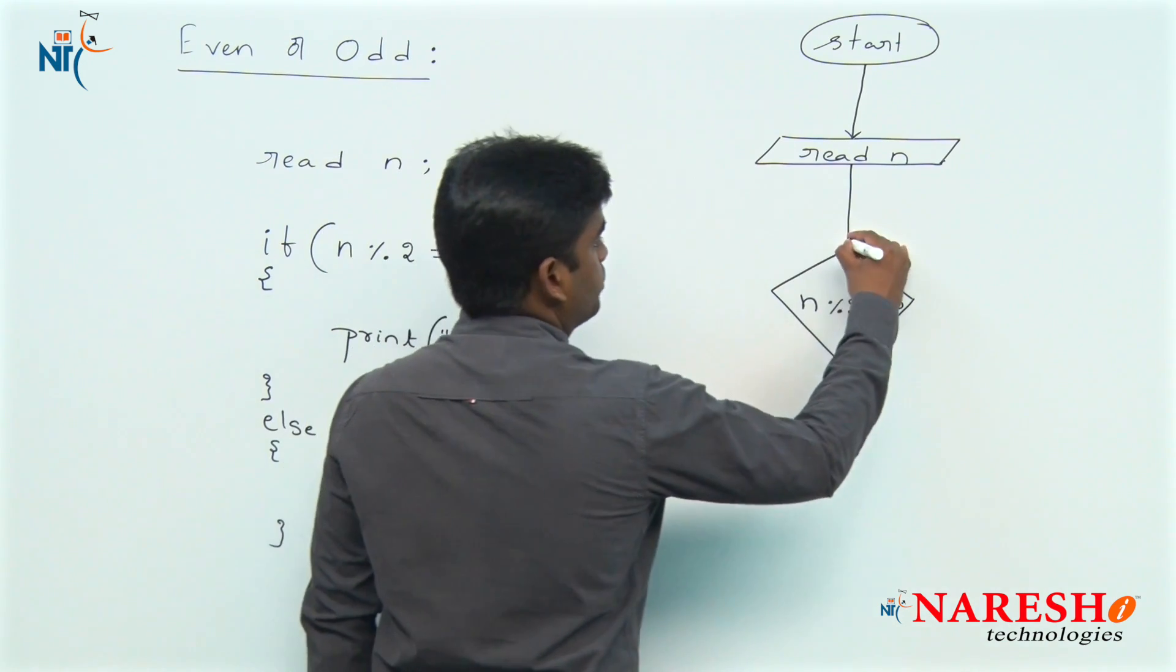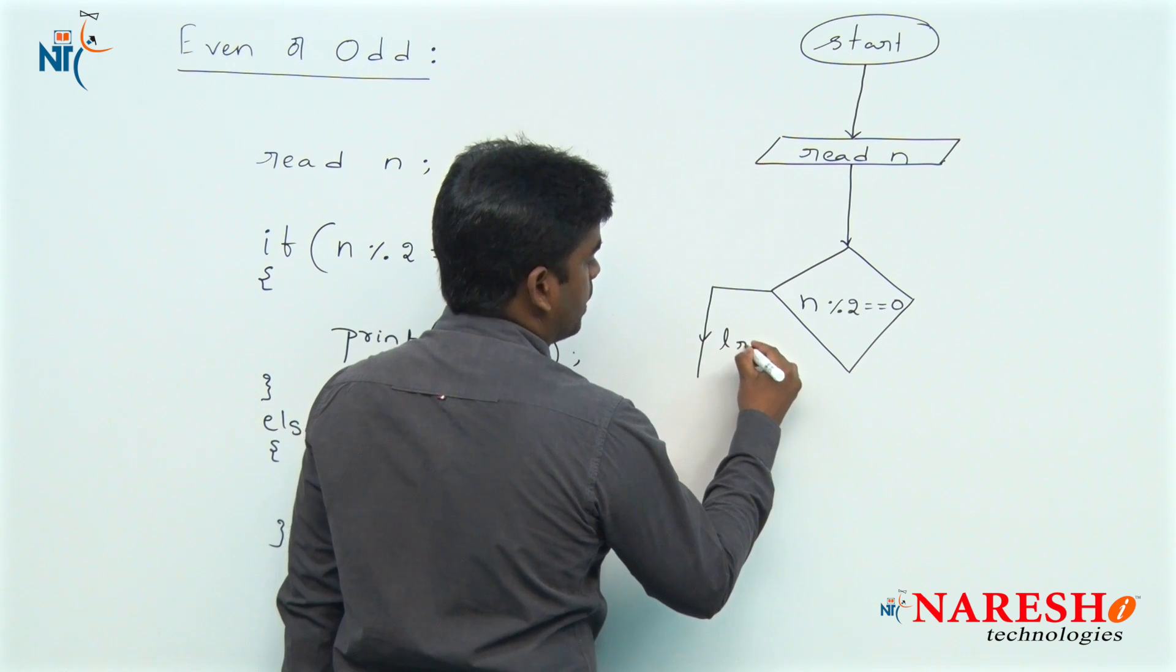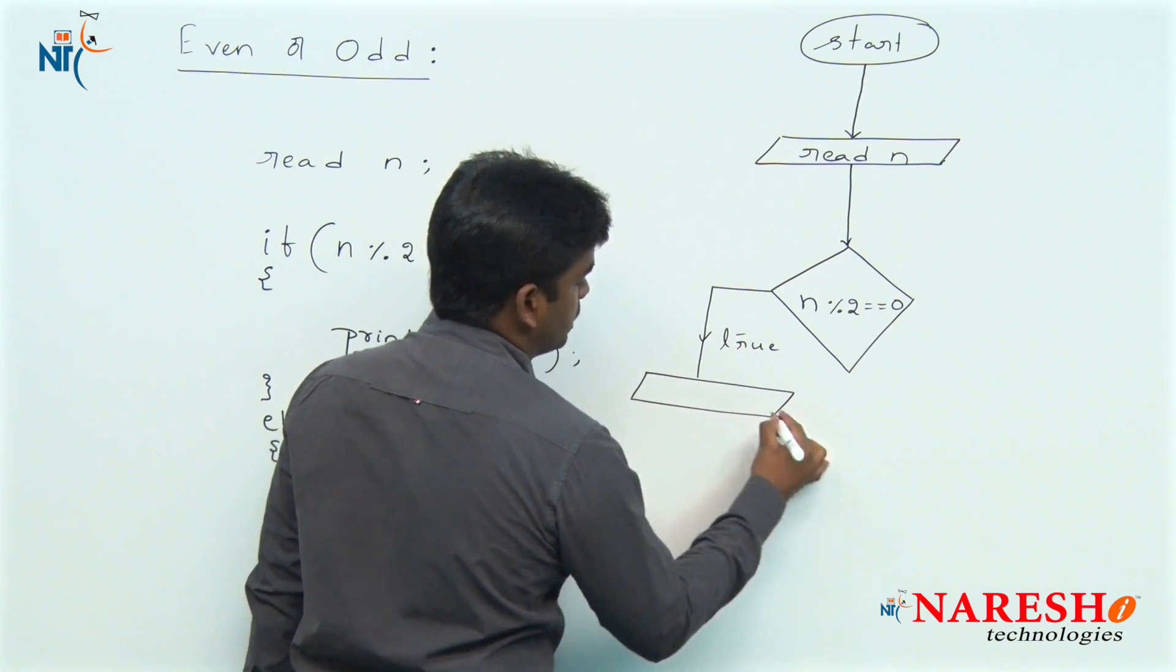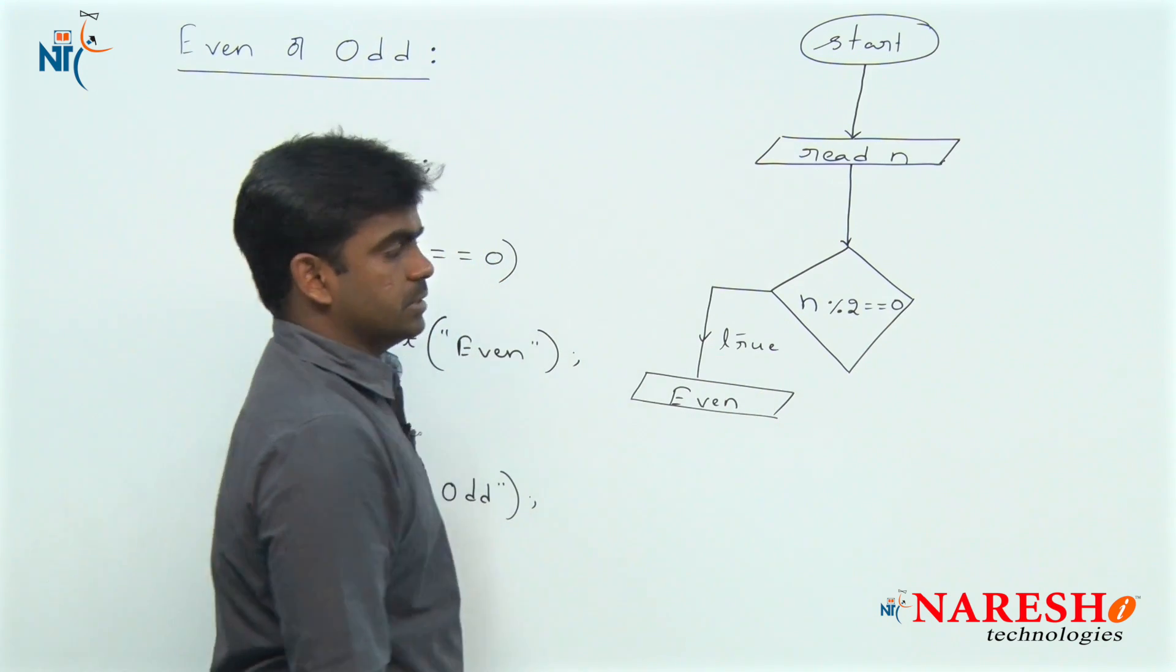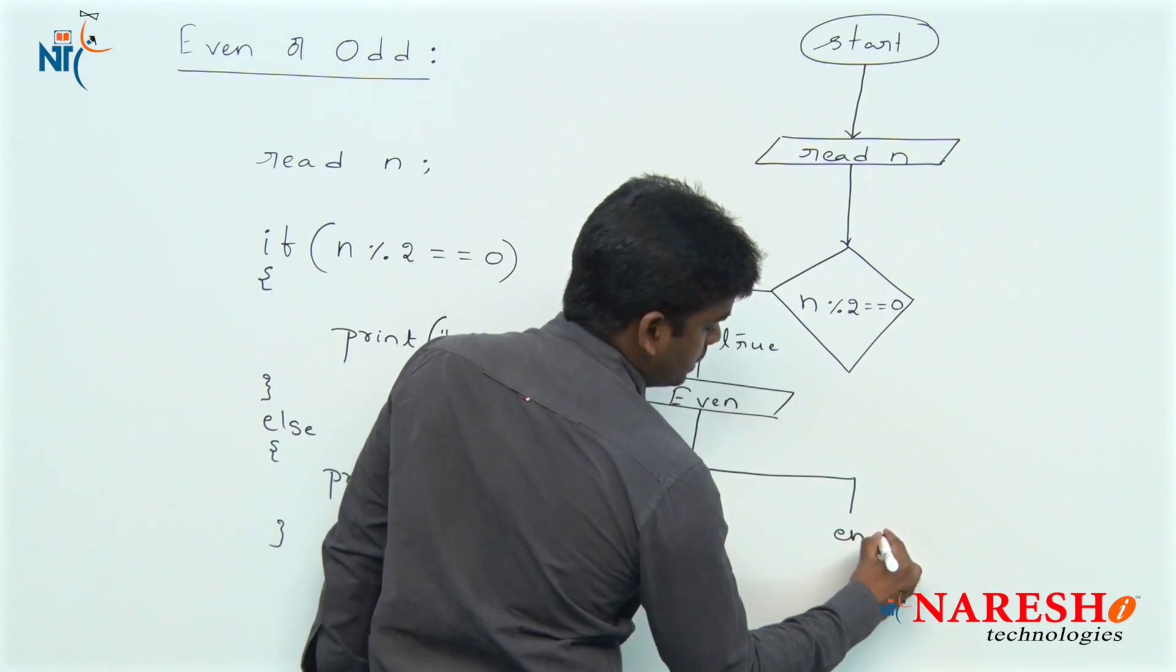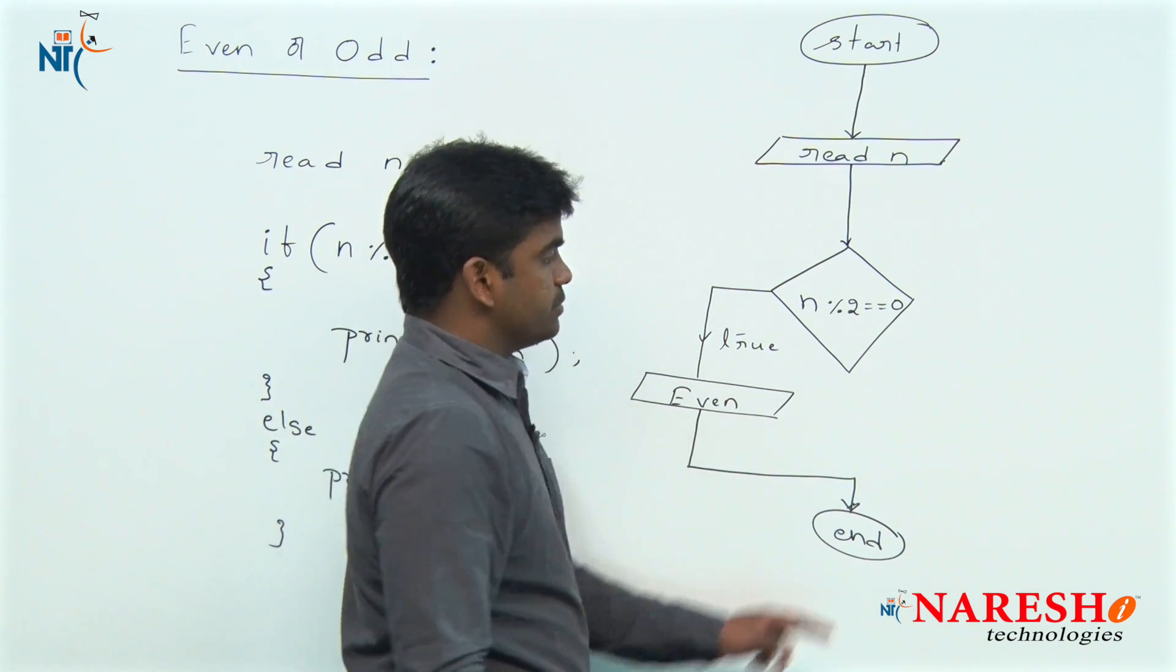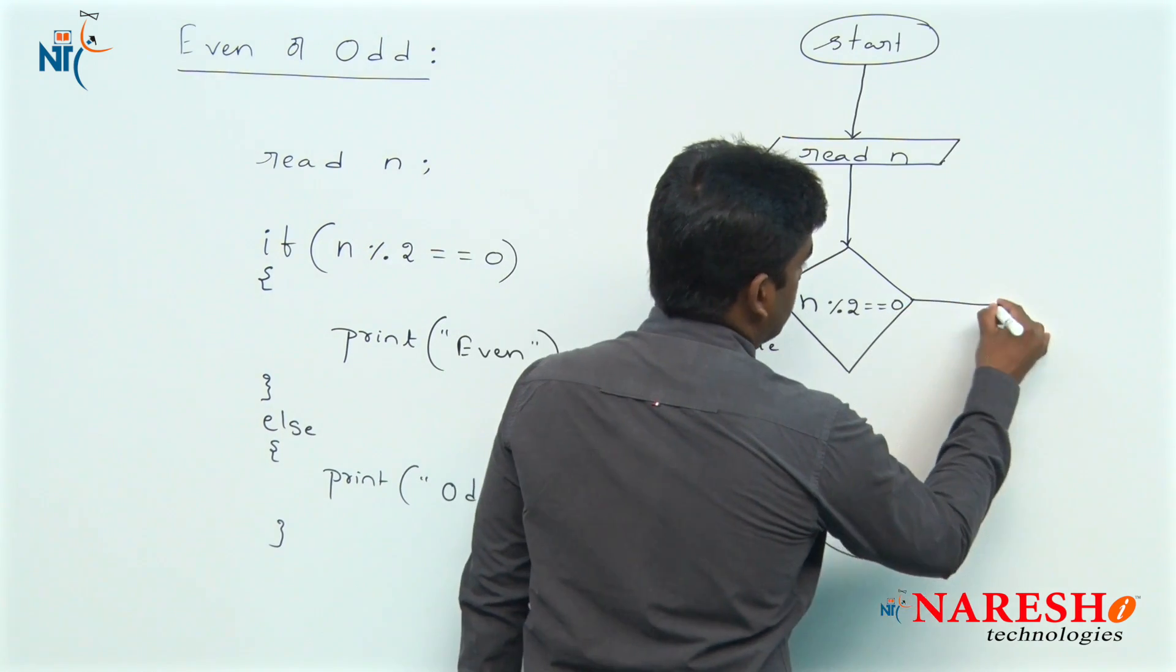Suppose if it is true, then here we can say it is an even number. After printing that even number, the flow ends. Suppose if condition has failed, if n is not divisible with 2, then the condition has failed.